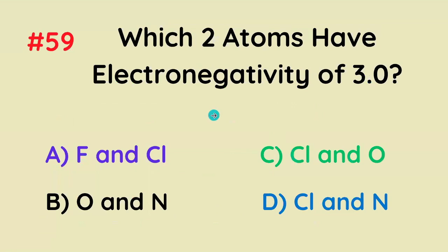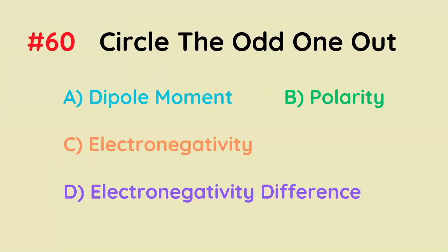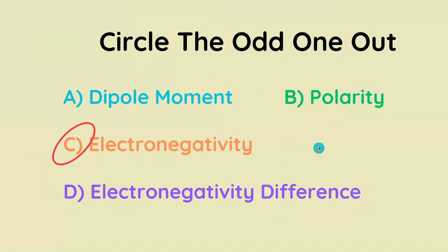Which two atoms have electronegativity values of 3.0? The correct answer is chlorine and nitrogen — fundamentally, you just have to memorize this. Circle the odd one out: electronegativity. All of the other terms are simply different ways of illustrating the exact same thing.